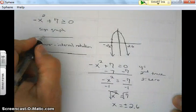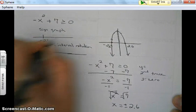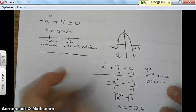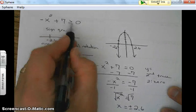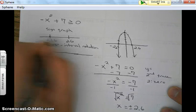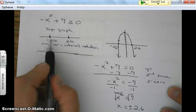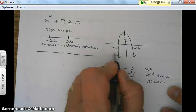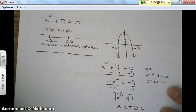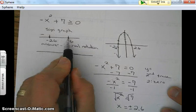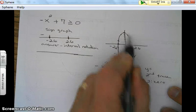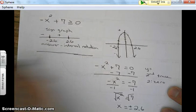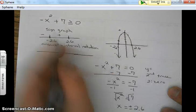So this one would be negative 2.6 and this one would be positive 2.6. So our sign graph, it has an equal sign so we're going to have closed dots. To the left, this graph is negative. Between these two numbers, the graph is positive. And to the right of this number, the graph is negative.